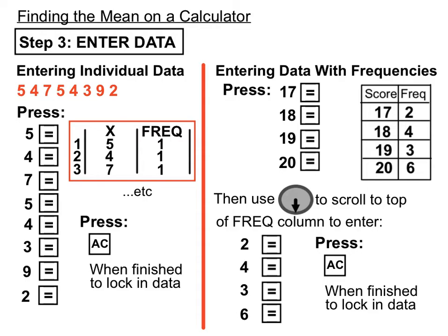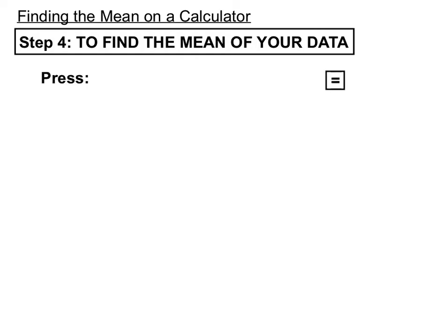Once we want to find the statistics from that including the mean, we press SHIFT then 1 which has a STAT label just above it, then VAR is our choice next. Then we'll press x with the bar on top, that's the mathematical symbol for mean x̄, and then we'll press equals. It's important once you've selected x̄ to press equals to lock in that choice, and then you'll have the mean displayed.